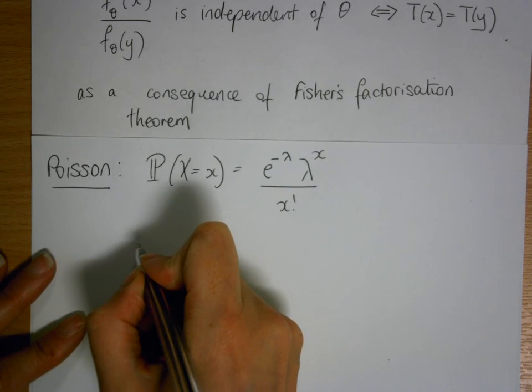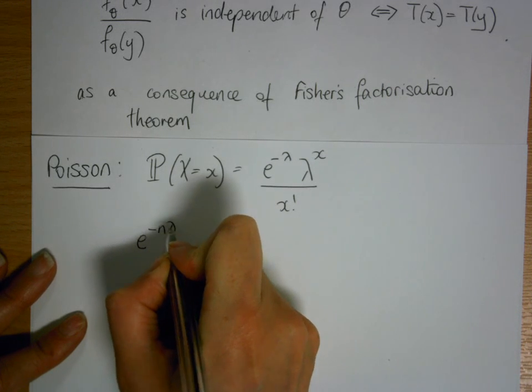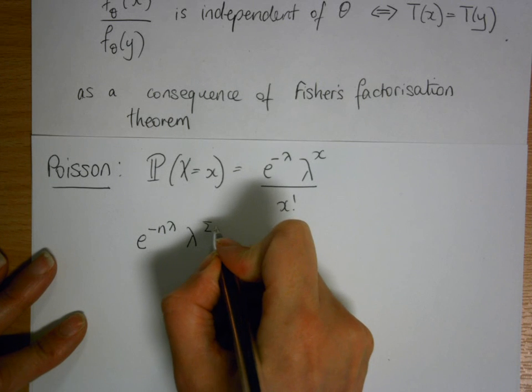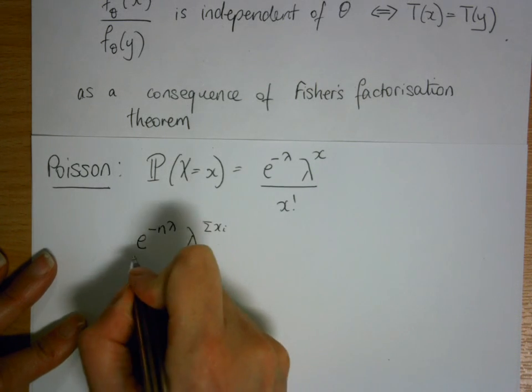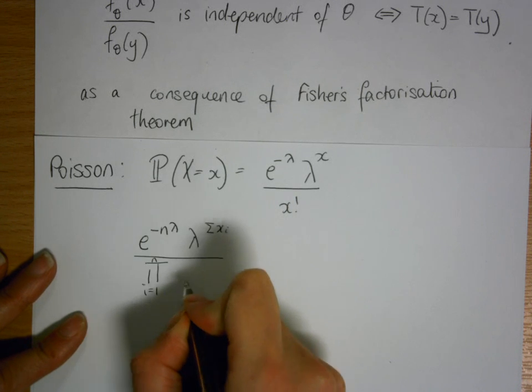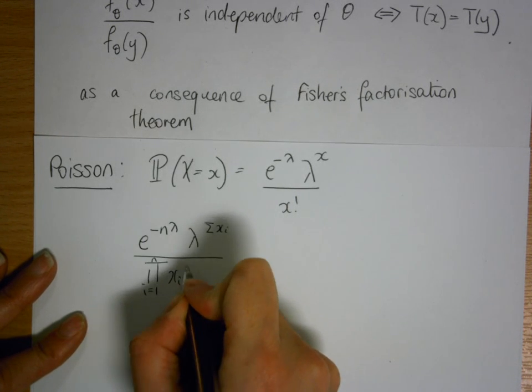e to the minus n lambda, lambda to the sum of xi, over the product i equals 1 to n of xi factorial.